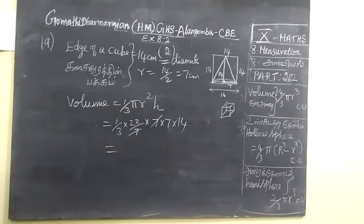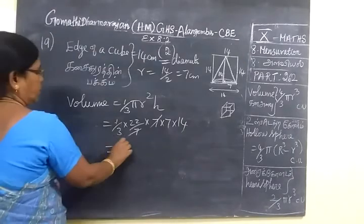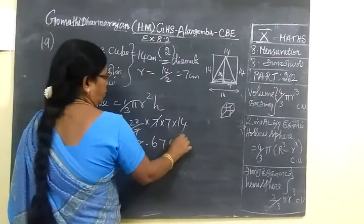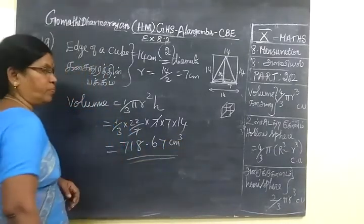The answer for the 19th question: 1 by 3, ask for 718.67 cm cubed. You have implants.